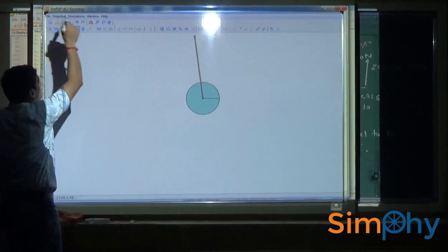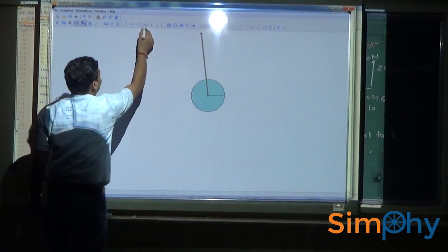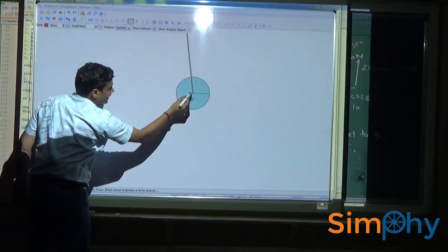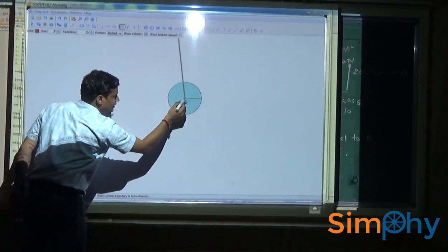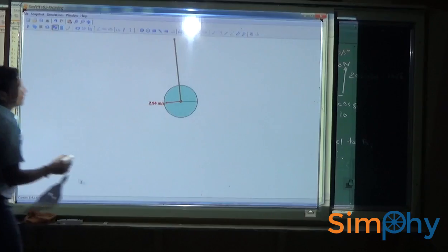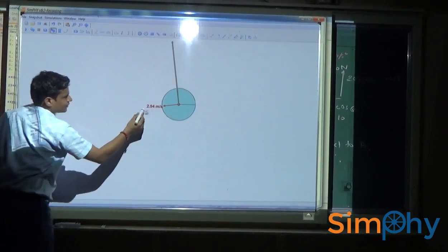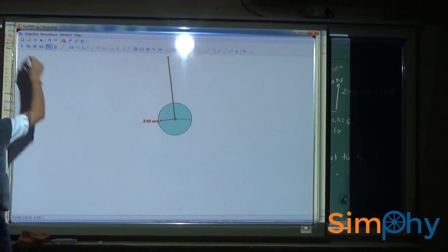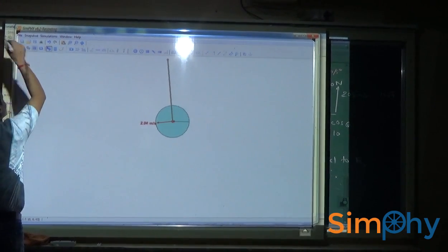Let us see the variation of velocity with time by placing a tracer to the center of disk. Now you can clearly see the velocity 2.94 meter per second at this particular extent of time. Now let us run simulation again.